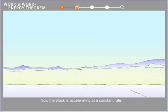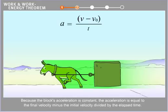Now, the block is accelerating at a constant rate. Because the block's acceleration is constant, the acceleration is equal to the final velocity minus the initial velocity divided by the elapsed time.